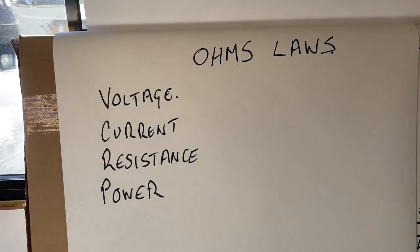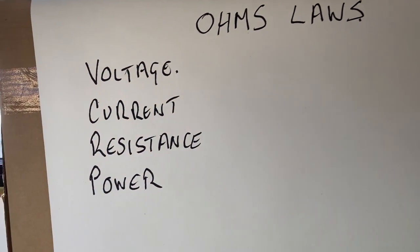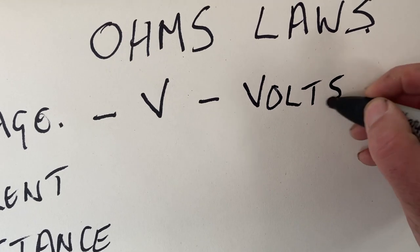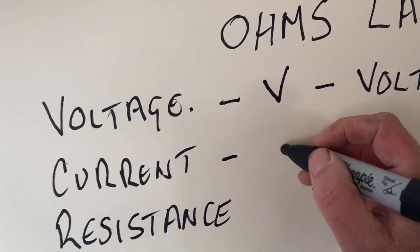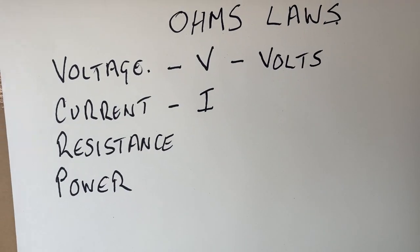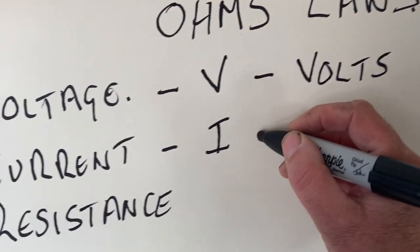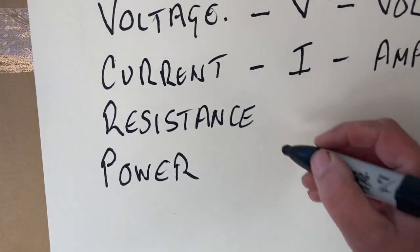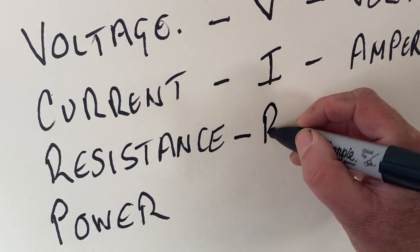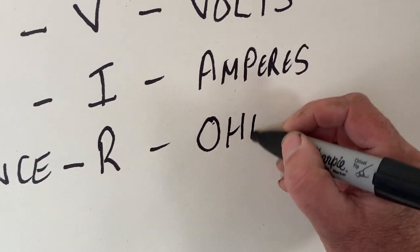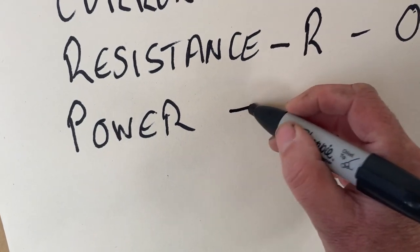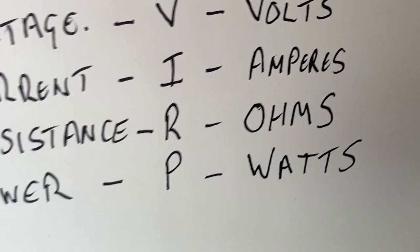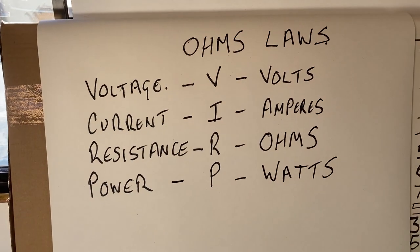Those are the four entities we're going to look at. Voltage — symbol V, measured in volts. Current — symbol I (slightly confusing, but C was already taken by coulomb), measured in amperes or amps for short. Resistance — symbol R, its unit is ohms. Power — symbol P, measured in watts. There you go — those are the four fundamental things at play.